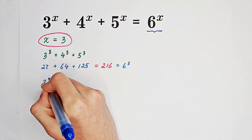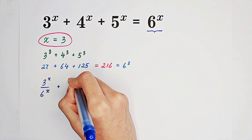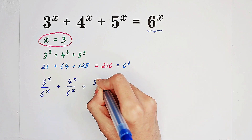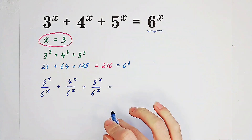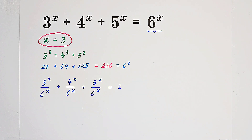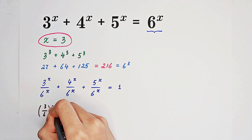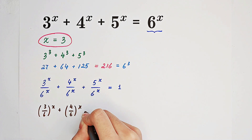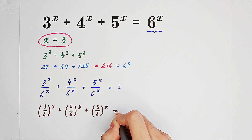So we get 3 to the power of x divided by 6 to the power of x, plus 4 to the power of x divided by 6 to the power of x, plus 5 to the power of x over 6 to the power of x. The right-hand side becomes 1, and the left-hand side is very pretty: it is just 3 over 6 to the power of x, plus 4 over 6 to the power of x, plus 5 over 6 to the power of x, equals 1.